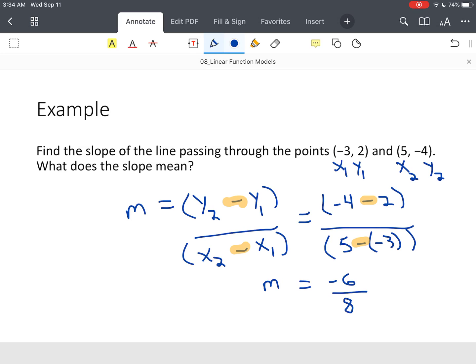Now, we always simplify this. So this means our slope is negative three-fourths.